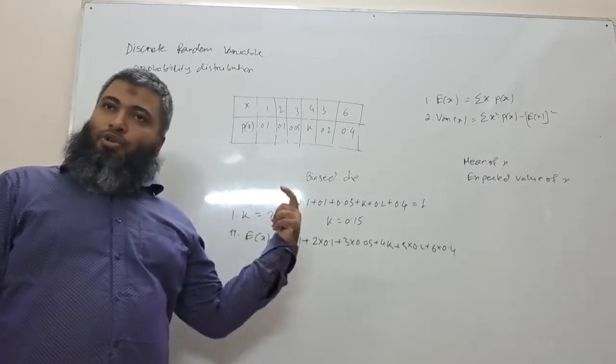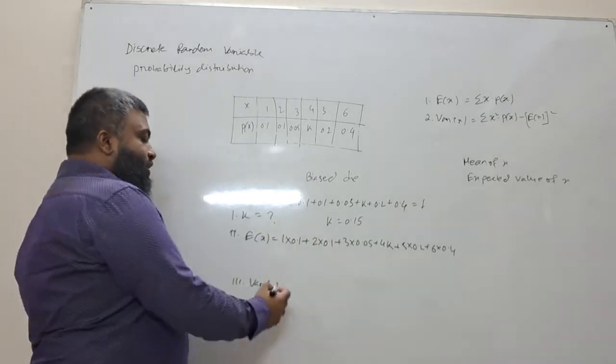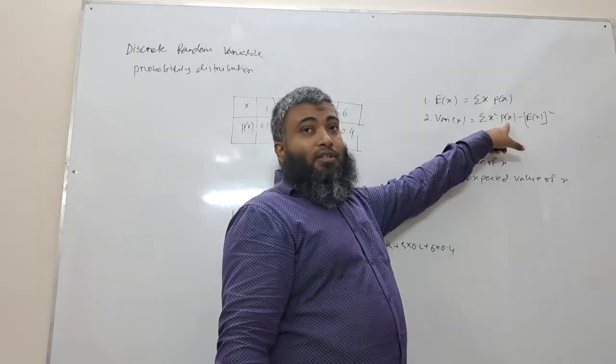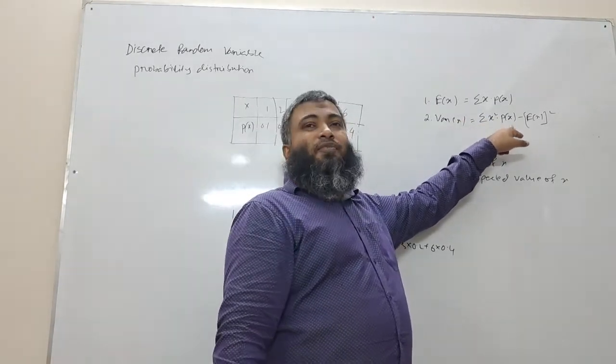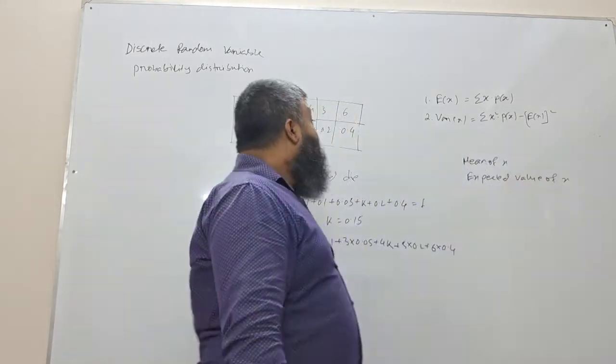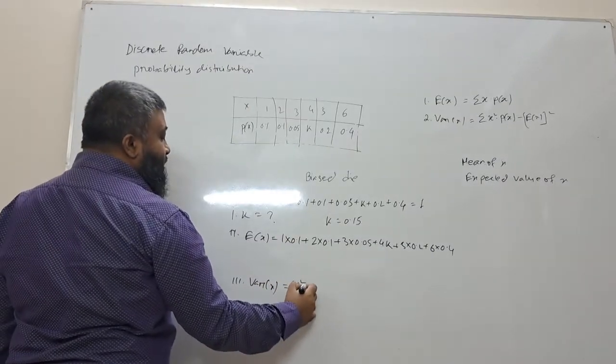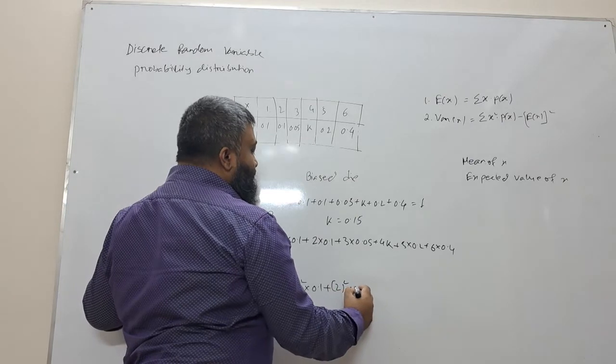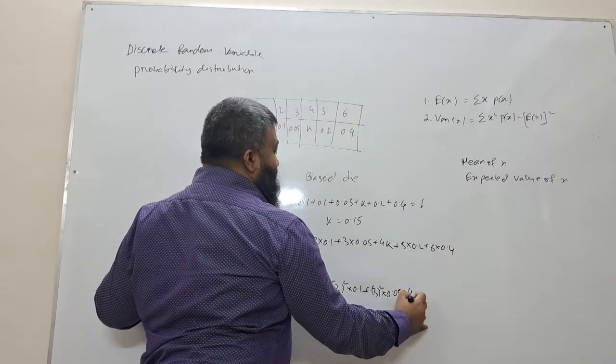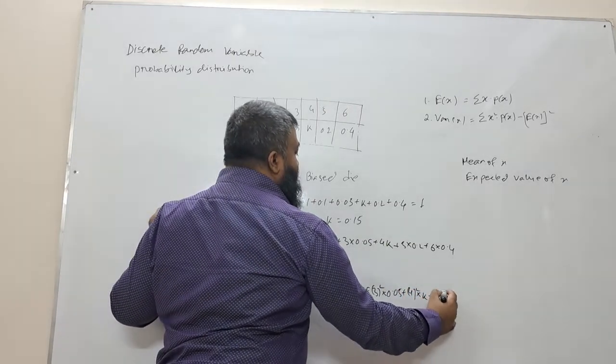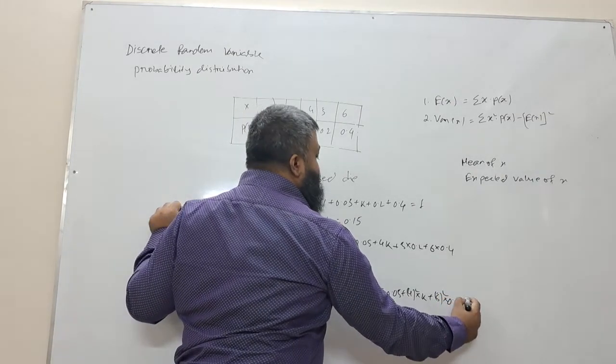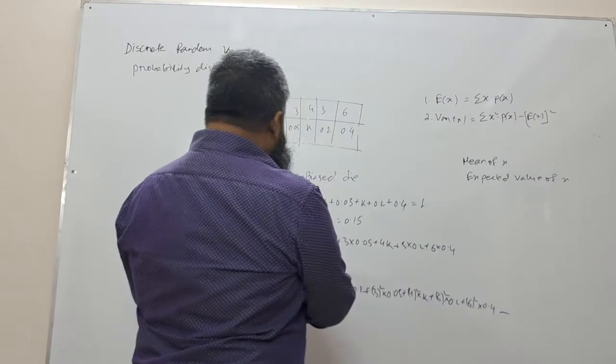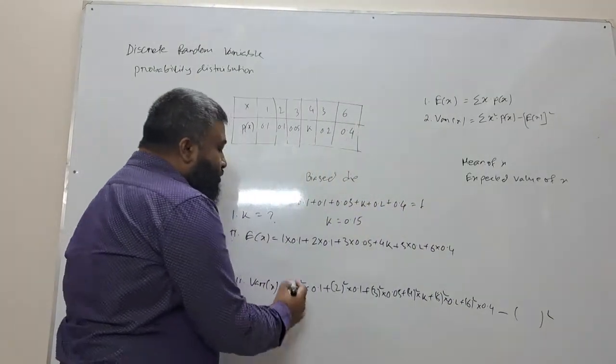For variance, we use summation of x squared into P(x). So we have 1 square into 0.1 plus 2 square into 0.1 plus 3 square into 0.05 plus 4 square into K plus 5 square into 0.2 plus 6 square into 0.4, minus x bar squared.